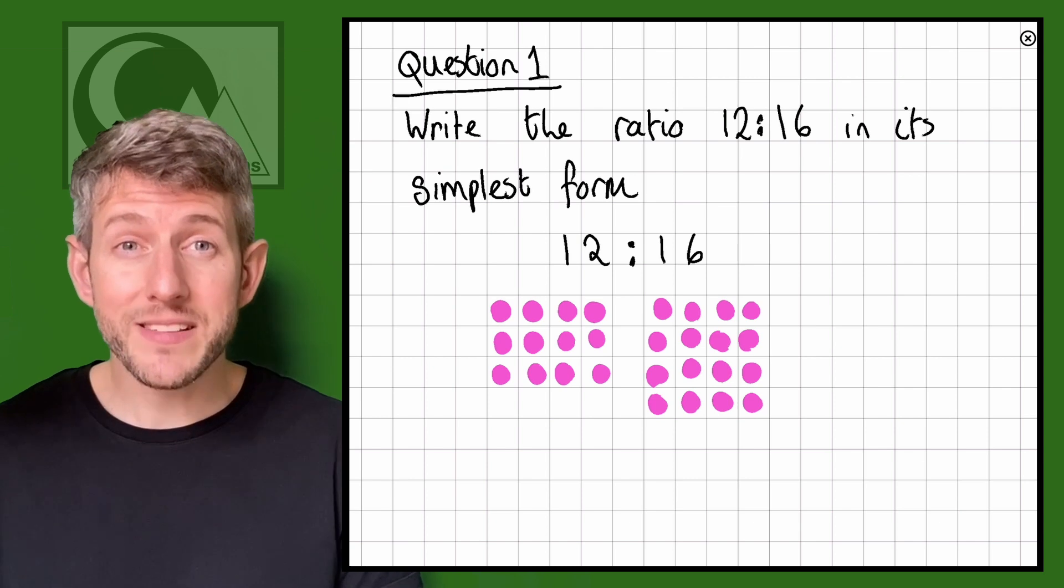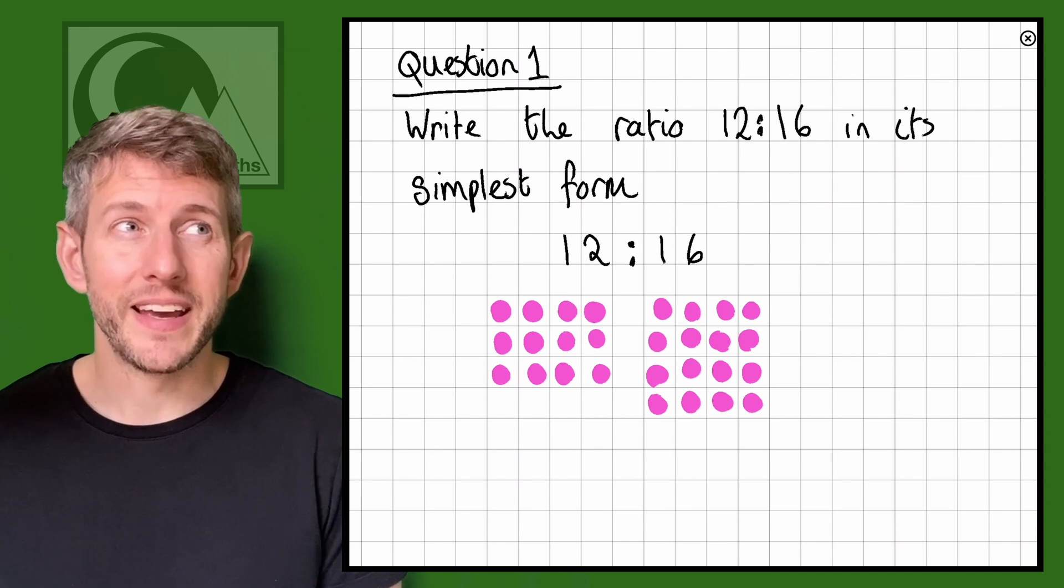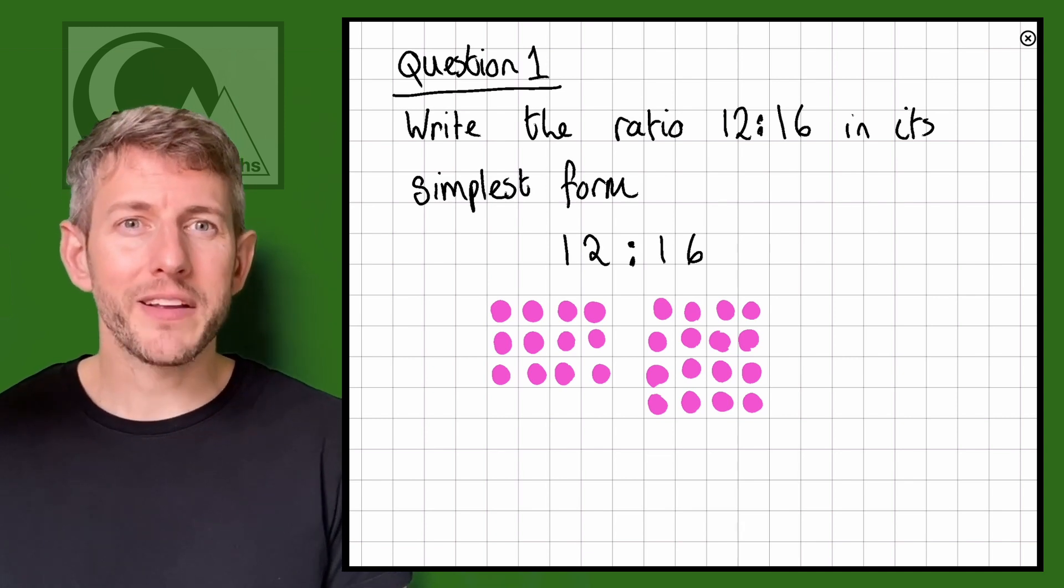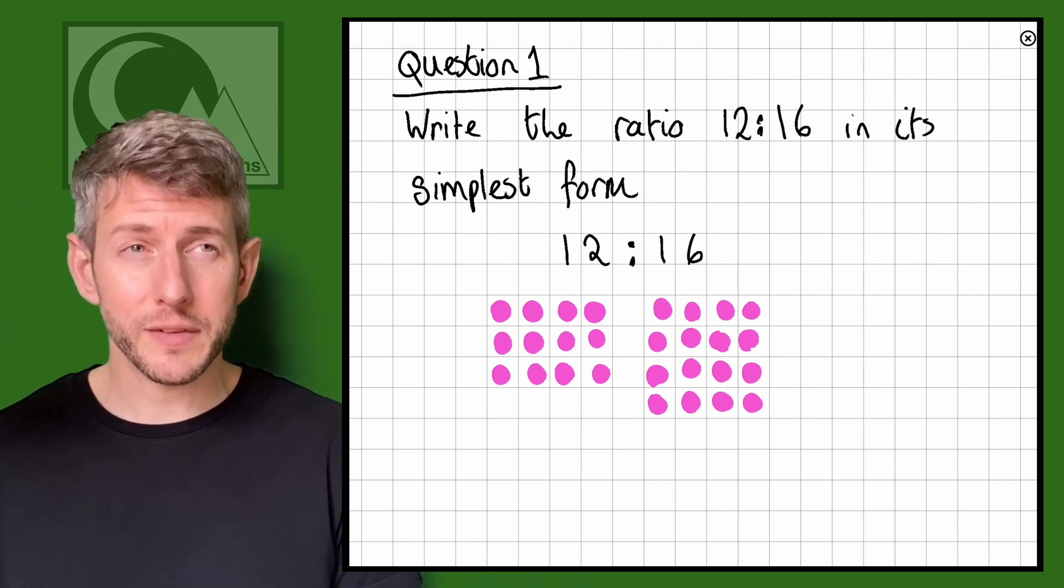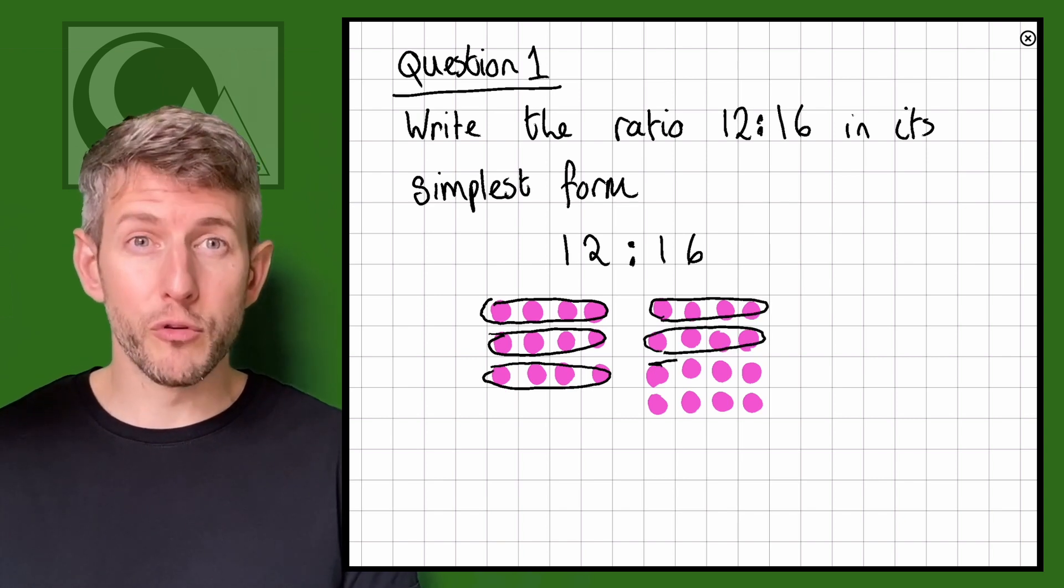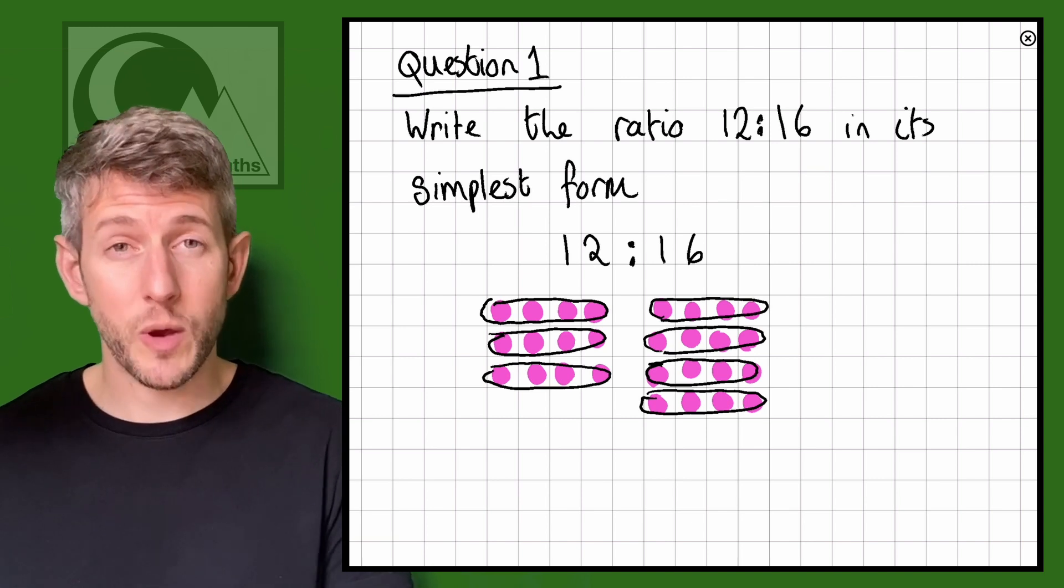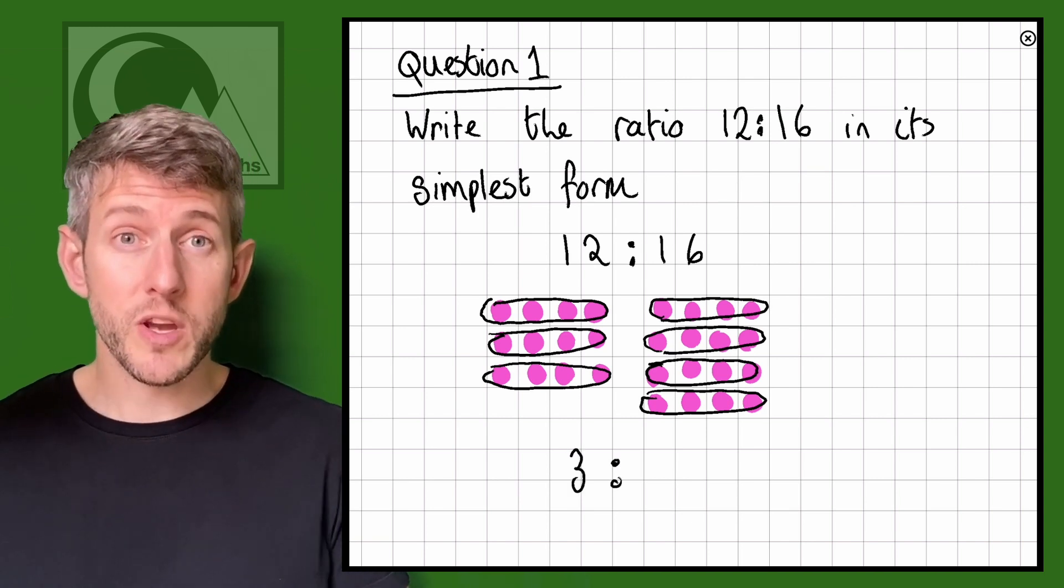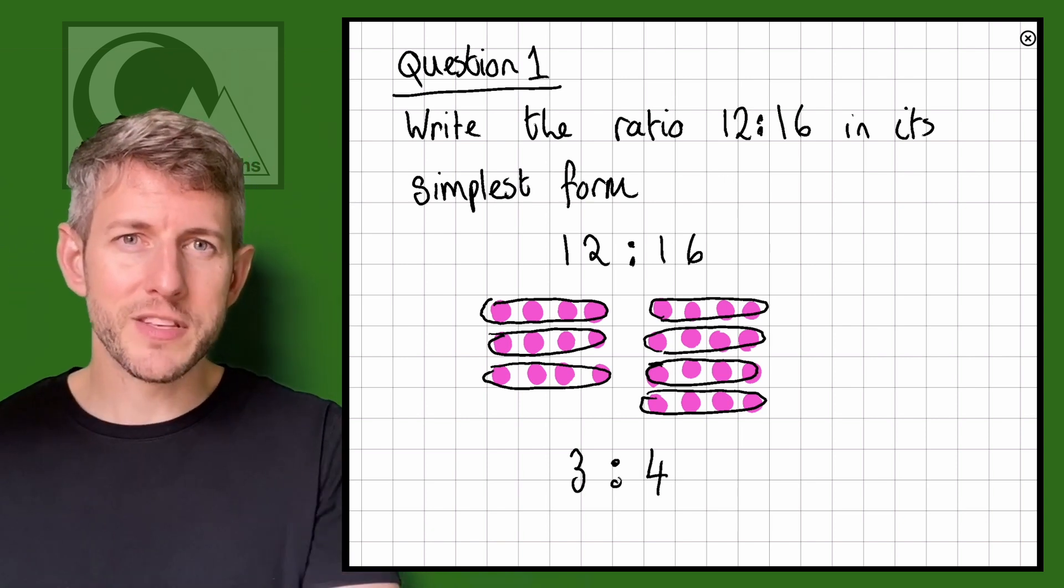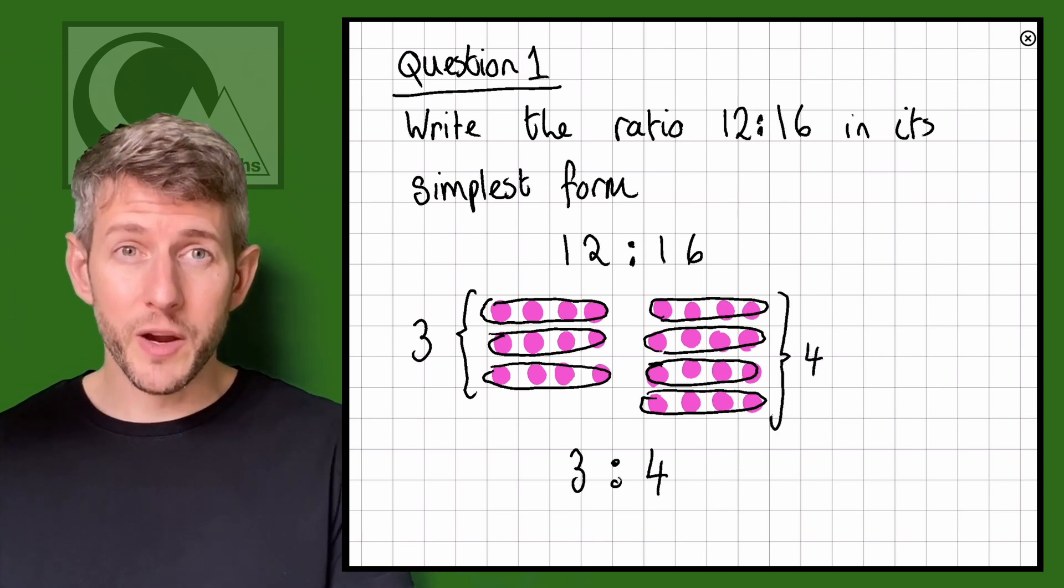Now the way that is going to be simpler than 12 to 16 is by dividing these all into groups of four. I can see here on one side I'm going to have three groups of four and on the other side we're going to have four groups of four. So what that means is this ratio which is 12 to 16 could also be three to four because it's these three things that are the same to these four things that are the same.